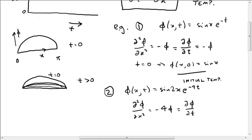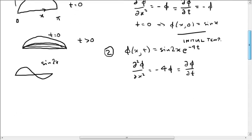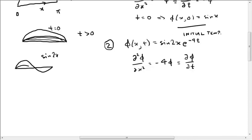So this means if our initial temperature distribution looks like this, this is supposed to be sine of 2x, it's not a very good drawing, but that's what it's supposed to be. Then over time, it will again decay and get smaller and smaller, like e to the minus 4t. So it'll go faster. It'll go faster than sine x.